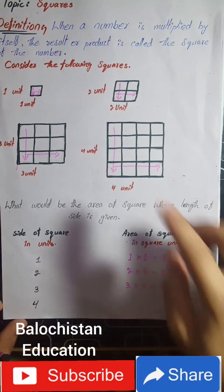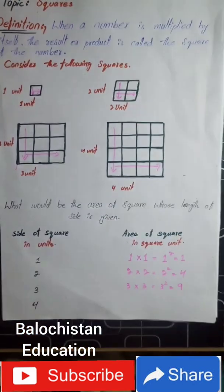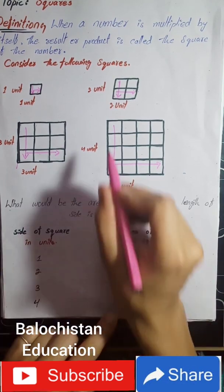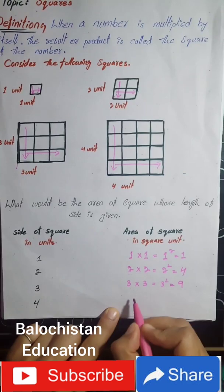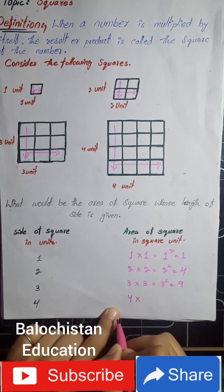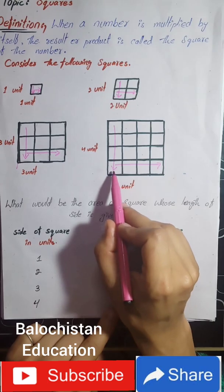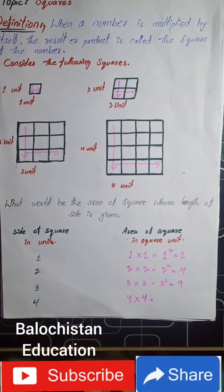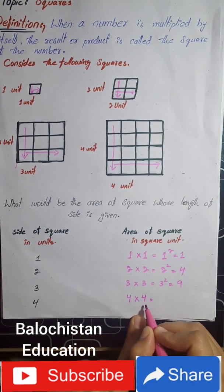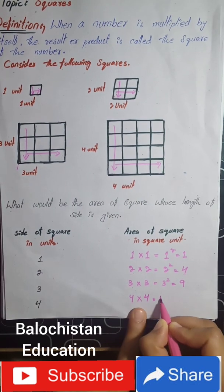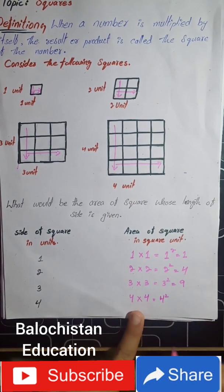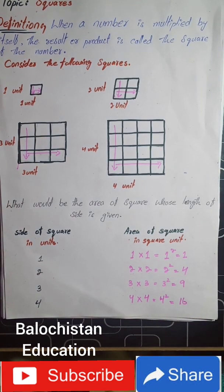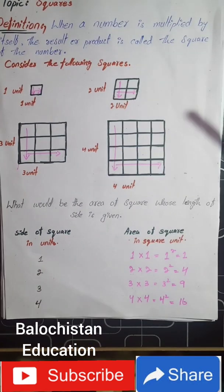Now for four units: count one, two, three, four — we have four units. To find the area, we multiply four by itself. Four times four can be written as four squared, and the result is 16. So the square of four is 16.